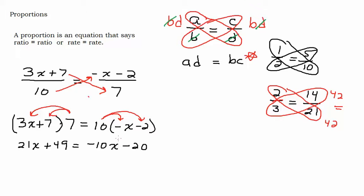And there's multiple ways to solve this, but I'll just go ahead and add 10x to both sides. And that will give us 31x. I have a feeling this one's not going to come out pretty. What do you think? Looks like it's got fractions written all over it. Let's see. Minus 49 from both sides.